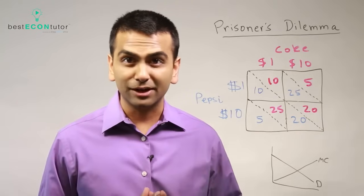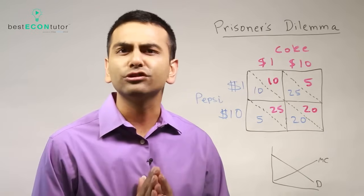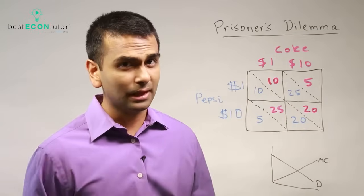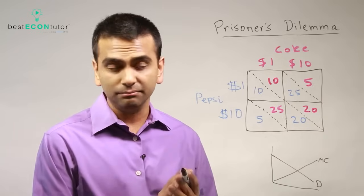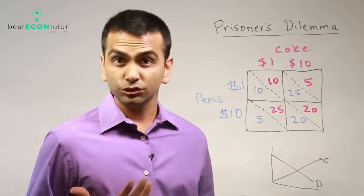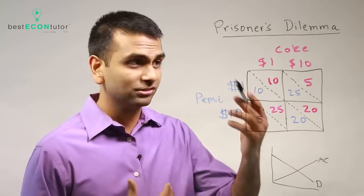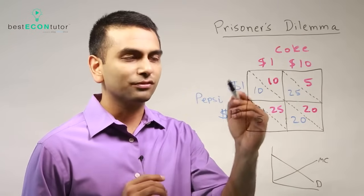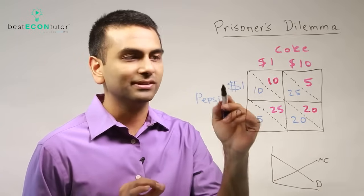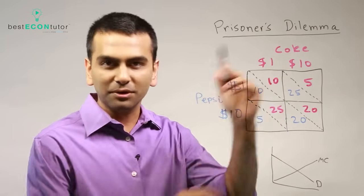Finally, let's look at how game theory actually applies to economics. The game we look at in economics is called the prisoner's dilemma - it's really just a type of game where the numbers are arranged in a way where something interesting happens. Let's say we're given a game between Coke and Pepsi, deciding whether to sell their product at $1 a can or $10 a can. Notice that even though those are numbers, they're really just strategy options - treat them no differently than a word representing the strategy option.